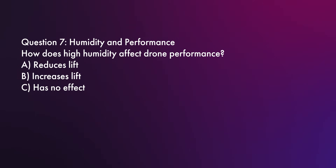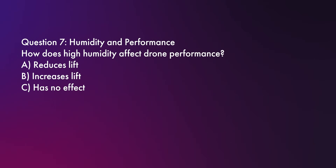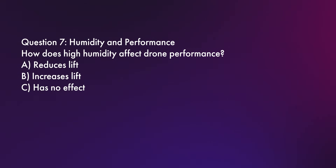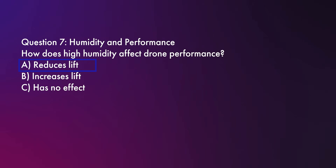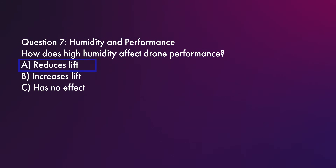Question number seven: How does high humidity affect drone performance? Does it reduce lift, increase lift, or have no effect? The correct answer is A, reduces lift. High humidity lowers the air density, which reduces the efficiency of your propellers and decreases stability. Increased lift happens in cooler, denser air — not humid conditions. And we know that humidity always affects air density to some degree, so it's not C.